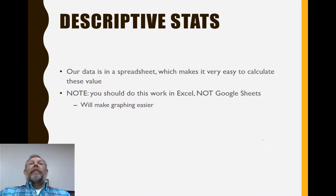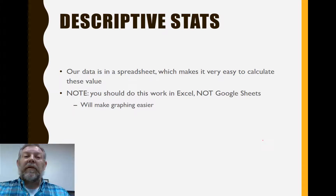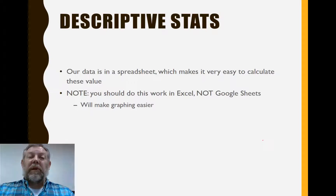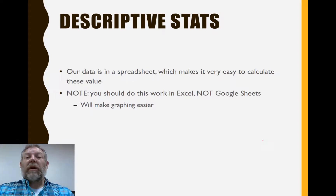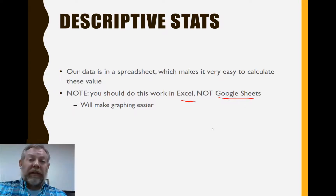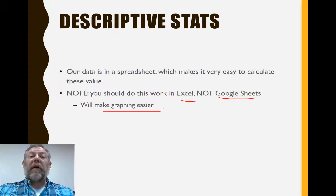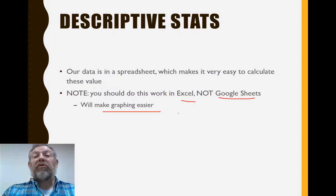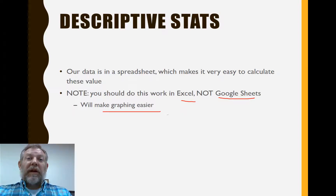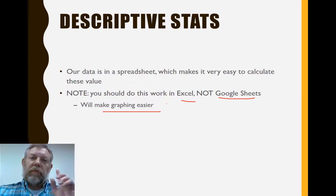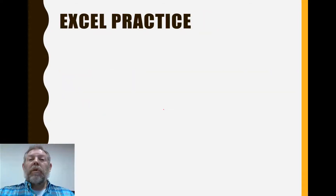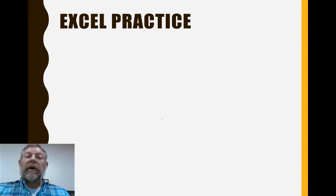I've shown you how to do this by hand, but of course our data is in a spreadsheet, and that's the beauty of spreadsheets — we can do these calculations much easier, and then we can take those calculations and graph them. The next step is I'm going to show you how to do these things in Excel. We're going to do this work in Excel, not Google Sheets. We collected the data in Google Sheets because it was a shared file, but Google Sheets does not do error bars very well and Excel does. That's why you've got to do your homework in Excel — otherwise you won't be able to make the graph the way I want you to make it.